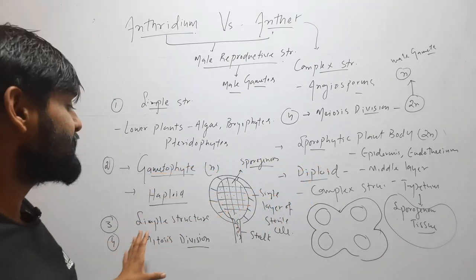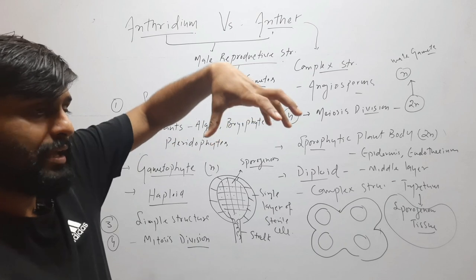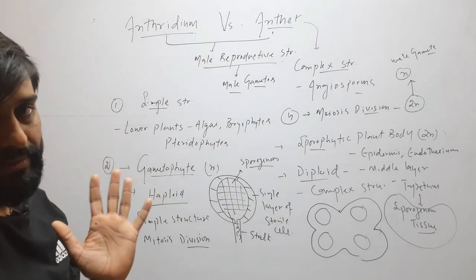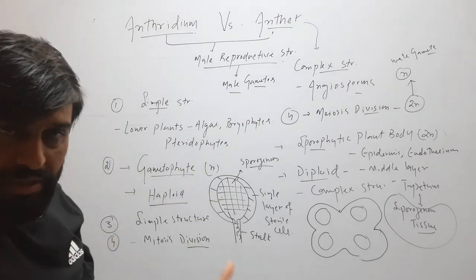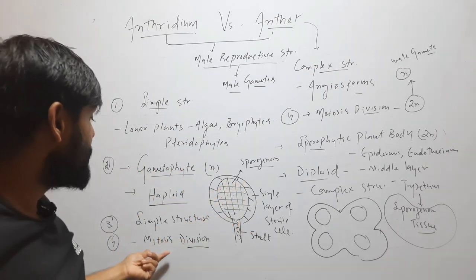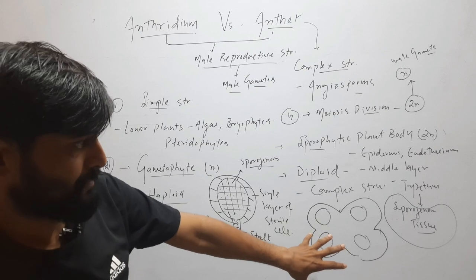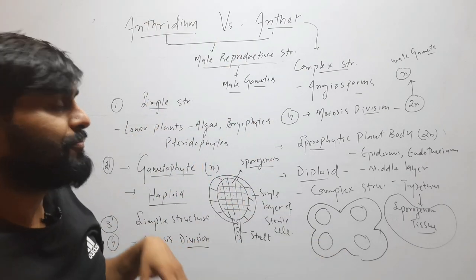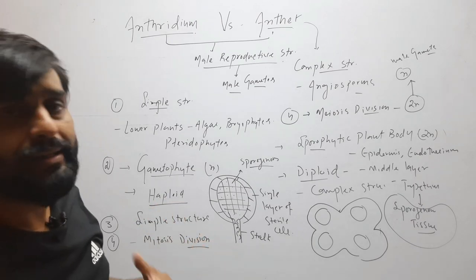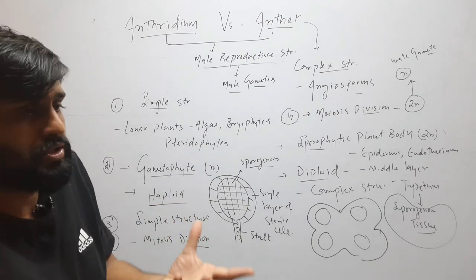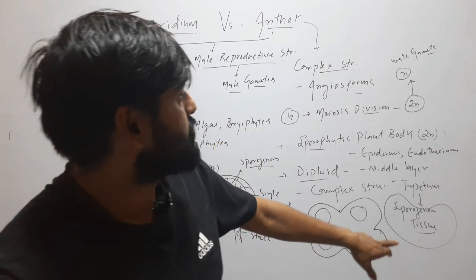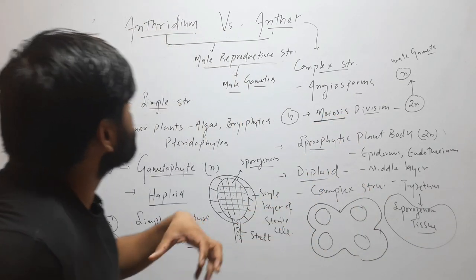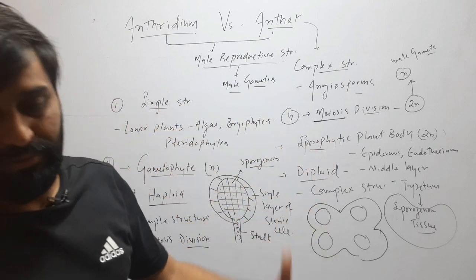Antheridium is a haploid and simple structure with a stalk and globular body covered by a single sterile jacket layer, with sporogenous tissue inside that forms male gametes by mitosis. Anther is a diploid and complex structure with outer epidermis, endothecium, middle layer, and tapetum surrounding the sporogenous tissue, where meiosis takes place to form male gametes.